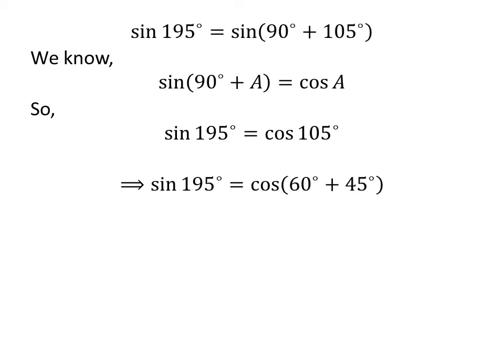Again, 105 degrees is equal to 60 degrees plus 45 degrees. So sine of 195 degrees is equal to cosine of 60 degrees plus 45 degrees.